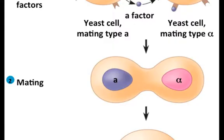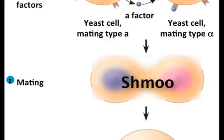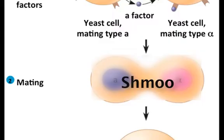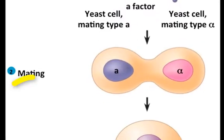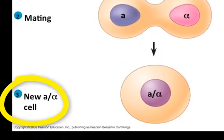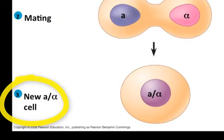Once they recognize one another, they commence to shmoo — that's right, shmoo. That's what they call it when yeasts mate. They become one cell and the genetic material from each cell is combined into a diploid cell. It's a process of genetic mixing that we can talk about later.